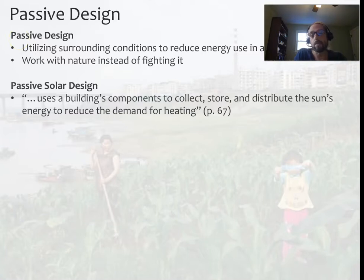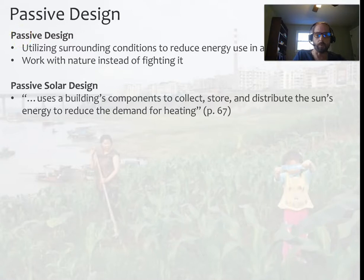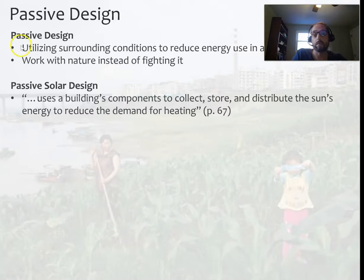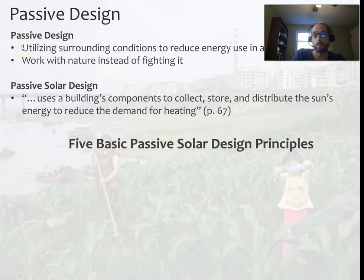Passive solar design is a major component of passive design, and one that people tend to focus on more. As defined in your book, it's using a building's components to collect, store, and distribute the sun's energy to reduce the demand for heating. This is really all about heating reduction, although I would add that lighting energy use reduction is part of this as well. We'll go over the five passive solar design principles one by one.